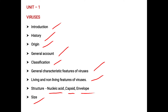In structure we studied the nucleic acid, capsid, and envelope. Under nucleic acid, viruses contain a nucleic acid core of genetic material which may be either DNA or RNA. Viruses containing DNA are called deoxiviruses and those containing RNA are riboviruses. Most plant viruses have single-stranded RNA, while animal viruses may have single or double-stranded RNA or double-stranded DNA.